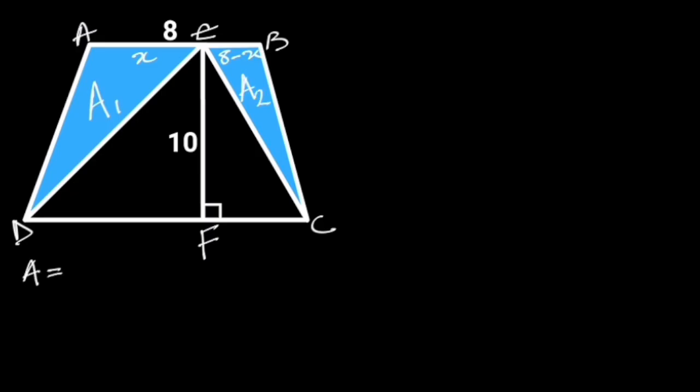Since the area of a triangle is equal to 1 over 2 times base times height, it follows that the area of Triangle ADE is equal to 1 over 2 times AE times EF. AE is equal to X, EF is equal to 10.